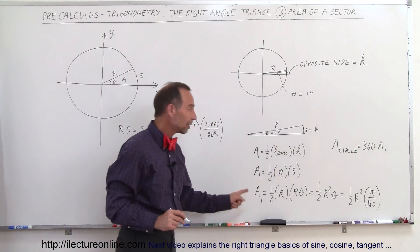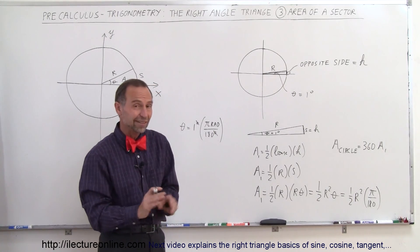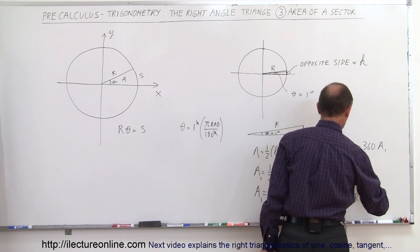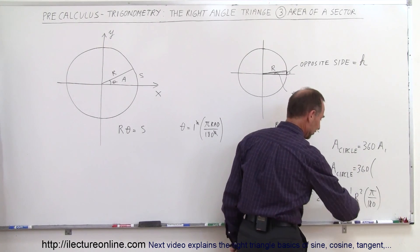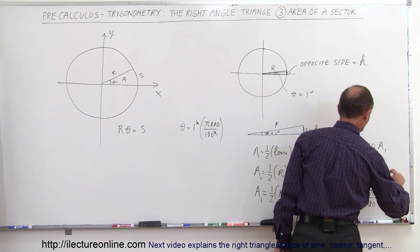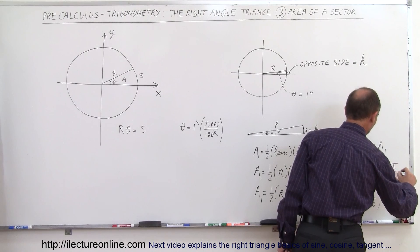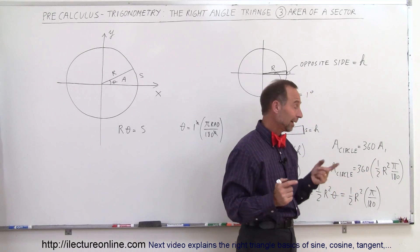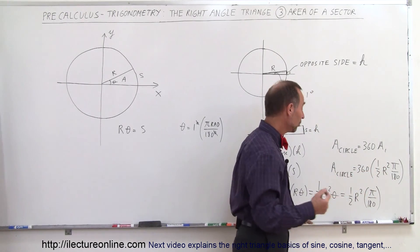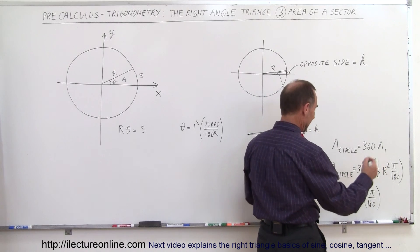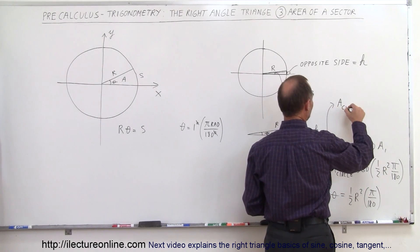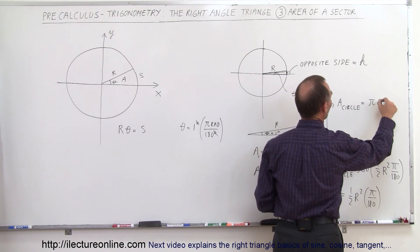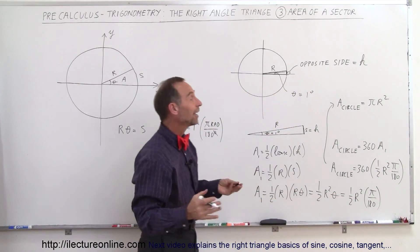If we take that area of a single triangle and multiply by 360, we get the area of the entire circle: 360 times one-half r squared times pi over 180. Notice that 360 divided by 180 is two, and two times one-half is one, so the area of a circle equals pi r squared. That's how we derive the area of a circle.